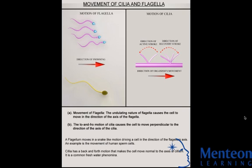Eukaryotic flagella are structurally identical to eukaryotic cilia. Here we can see on the left a flagellum which is moving in a snake-like motion, driving a cell in the direction of the axis of the flagellum. Cilia have a back and forth motion that makes the cell move in a direction perpendicular to the axis of the cilia.